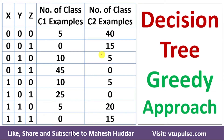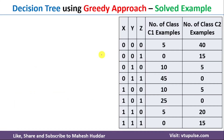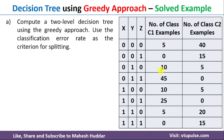Welcome back. In this video, I will discuss how to build a decision tree for the given dataset using a greedy approach. We have been given a dataset with three attributes X, Y, and Z. C1 is the first class and C2 is the second class. Given this particular dataset, we need to build the decision tree using the greedy approach.